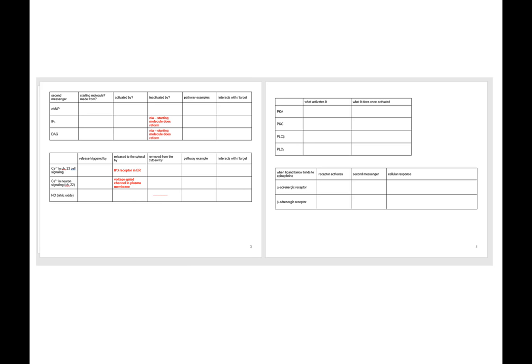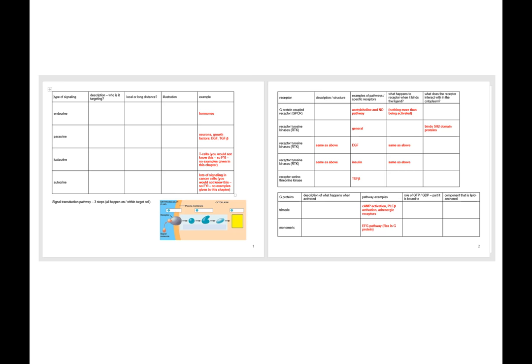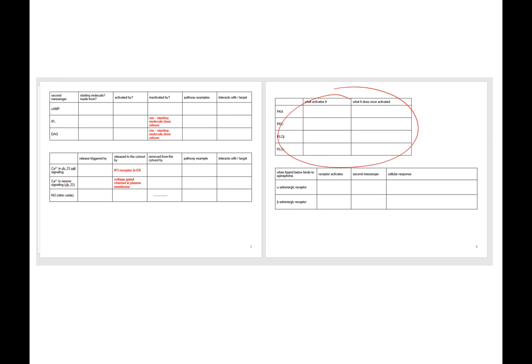I've given you four charts that I highly suggest you fill in before you take the quiz and have with you. It's not important for me for you to memorize all of this — it's about applying your knowledge. So if you can have descriptions of receptors and what they interact with, the G proteins, and the different types of signaling, the quiz will be really easy.